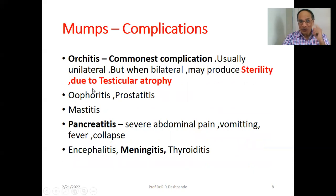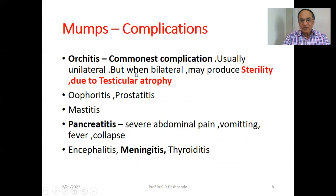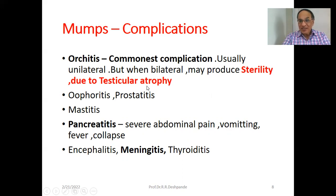Complications of mumps: Orchitis is the commonest complication, usually unilateral — one testis is swollen. But when bilateral, it may produce sterility. This occurs because of testicular atrophy — shrinkage of the testis leading to no spermatogenesis.